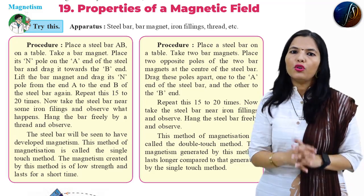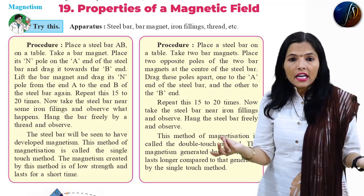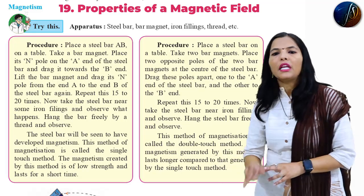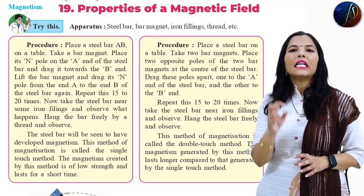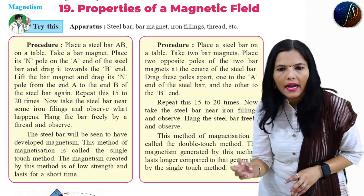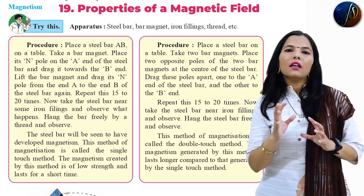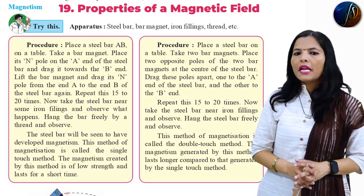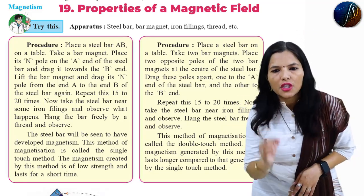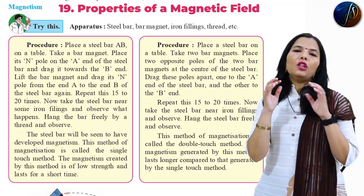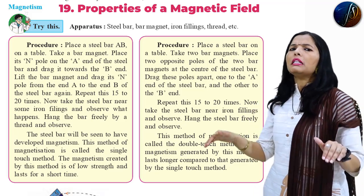Once again, the definition: what is the single touch method? To produce magnetism in a steel bar by using a single bar magnet — this type of method is called the single touch method.